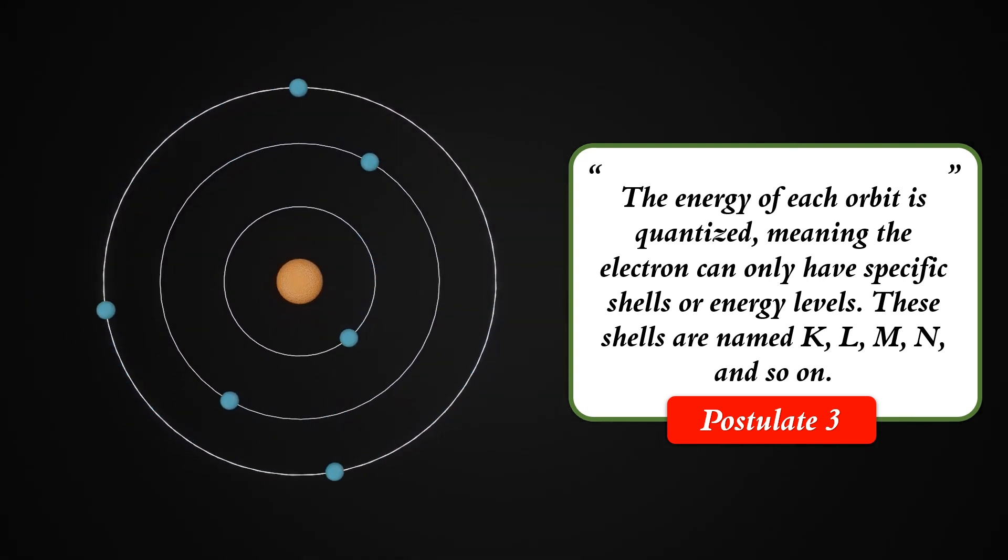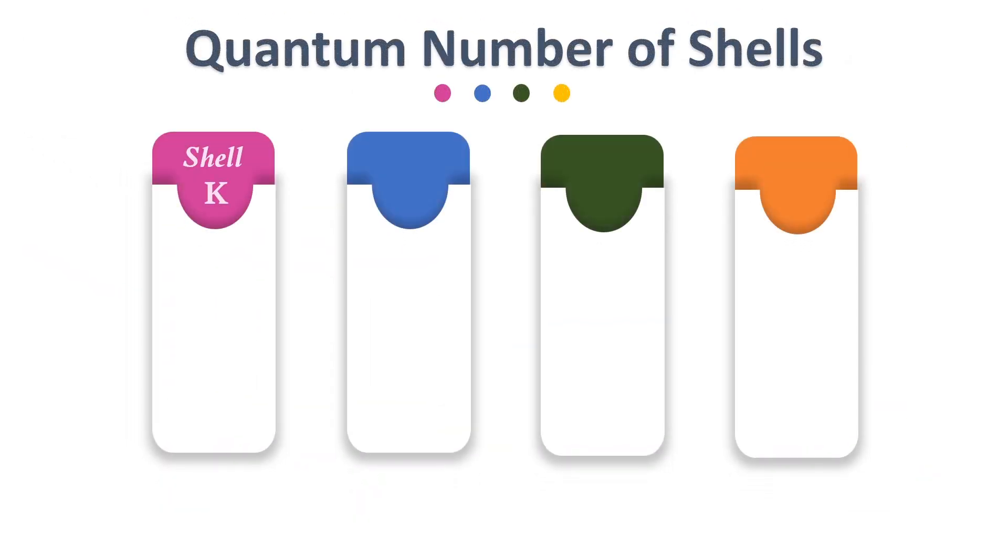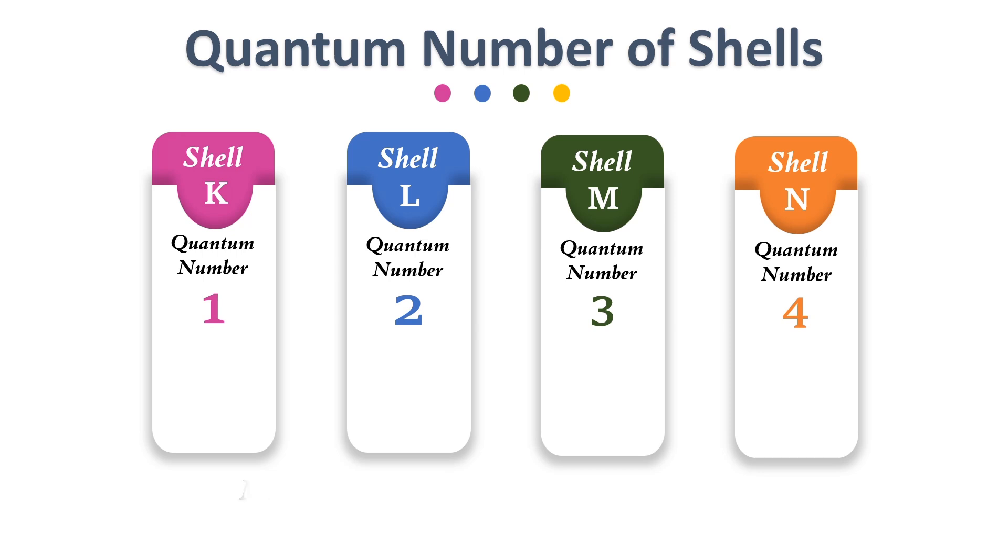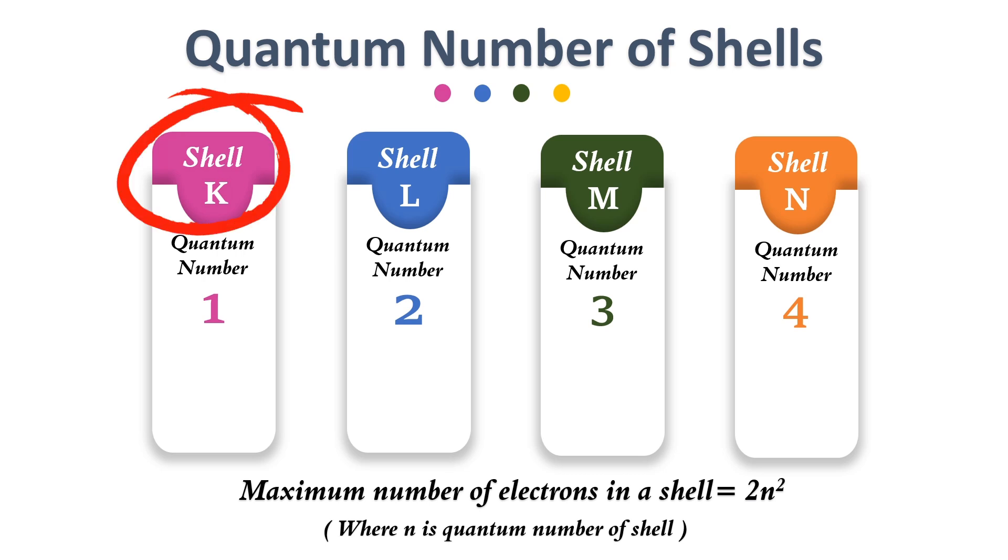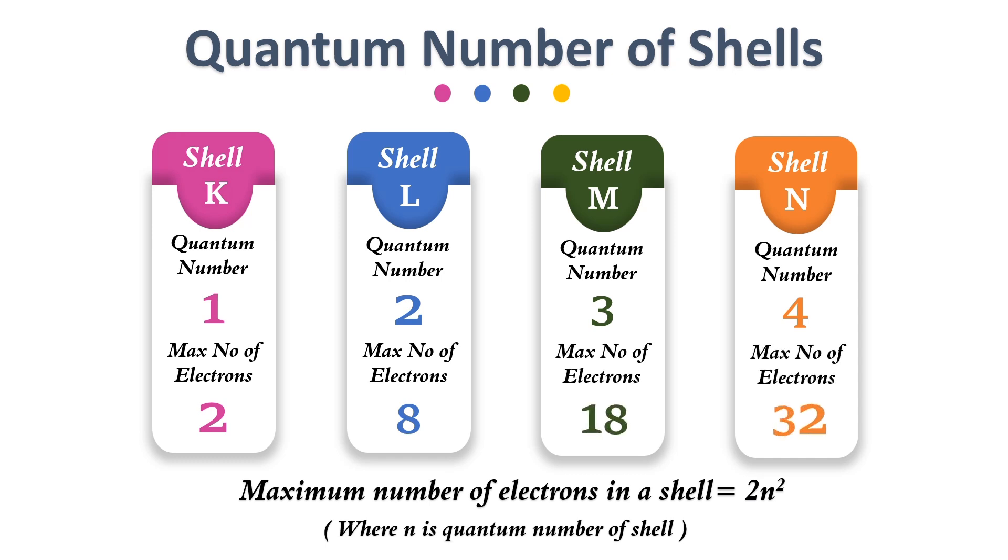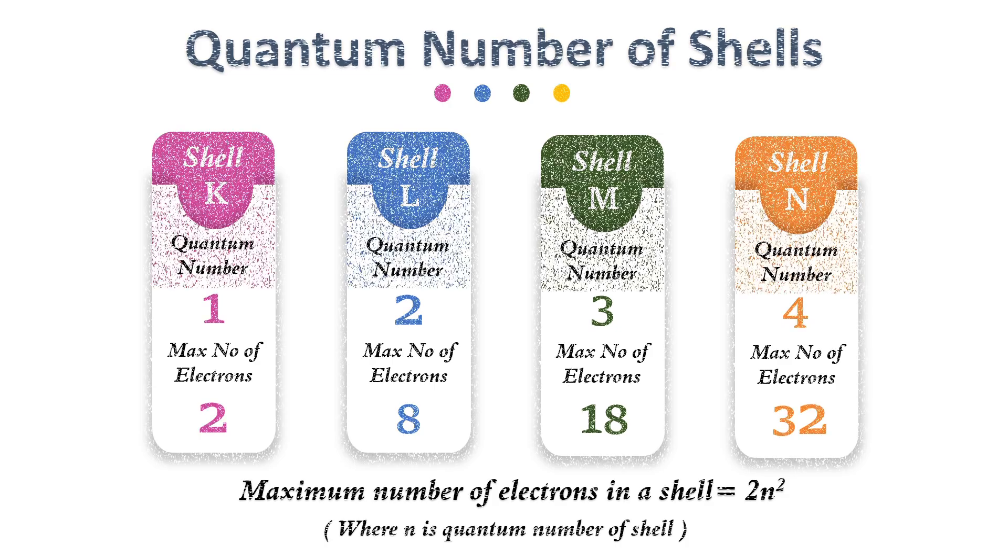These shells are named K, L, M, N, and so on. The quantum number of the innermost K shell is 1, 2 for L, the M shell has quantum number 3, and so forth. The maximum number of electrons in a shell is given by the formula 2N², where N is the principal quantum number of the shell. The first and closest K shell to the nucleus has the lowest energy and can only hold 2 electrons. Next up, the L shell can hold up to 8 electrons. In this way, we can get the maximum number of electrons for each shell by substituting the value of the quantum number.